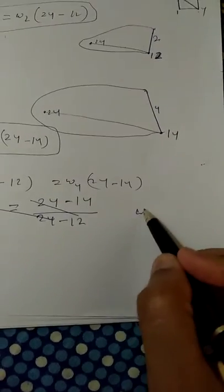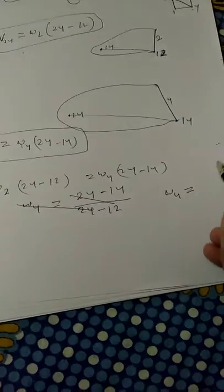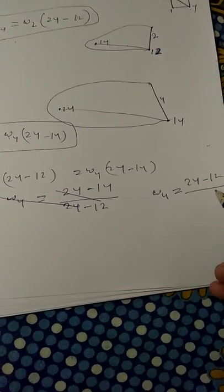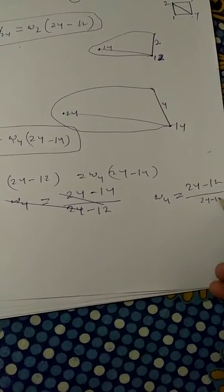It is wrong. Let me write it again. Omega 4 is equal to (I24 minus I12) divided by (I24 minus I14).